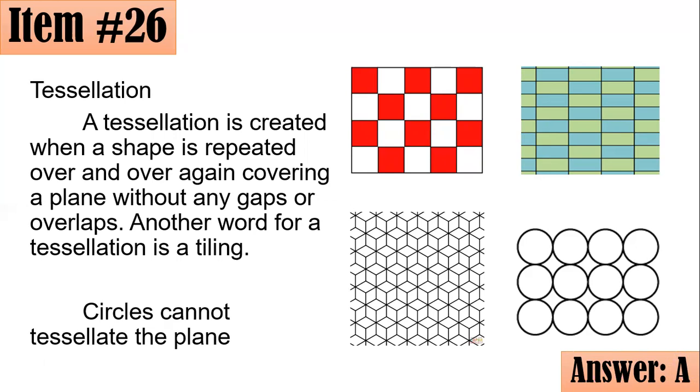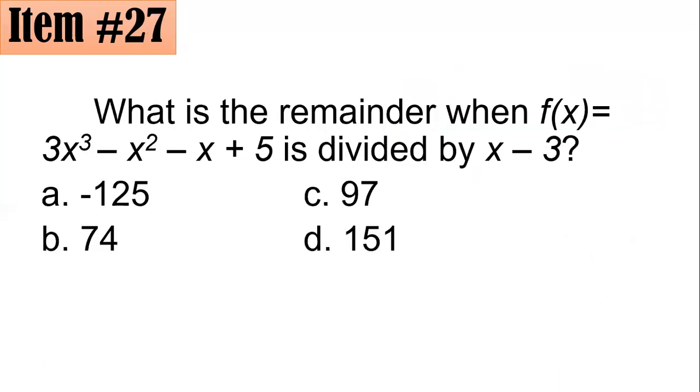Number 27. What is the remainder when f(x) = 3x³ - x² - x + 5 is divided by x - 3? Is it -1, 2, 5, 74, 97, or 151?